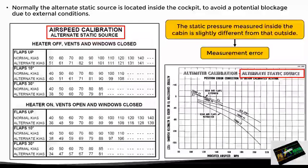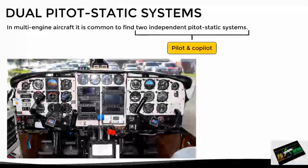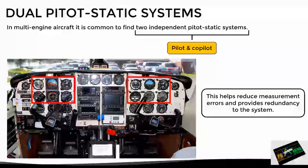One thing to finish is that in multi-engine aircraft, it is common to find two independent pitot static systems — one for the pilot's instruments and the other for the copilot's instruments. This design is quite beneficial as it reduces measurement errors and provides redundancy, since the instruments on one side can be compared with those on the other side to check how much difference they have or if some kind of problem is occurring. This procedure is known as a cross-check.